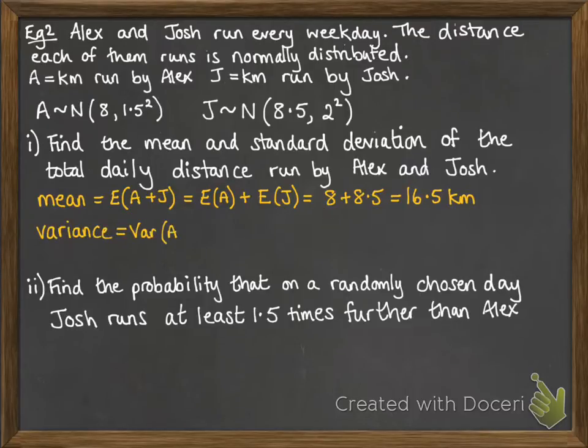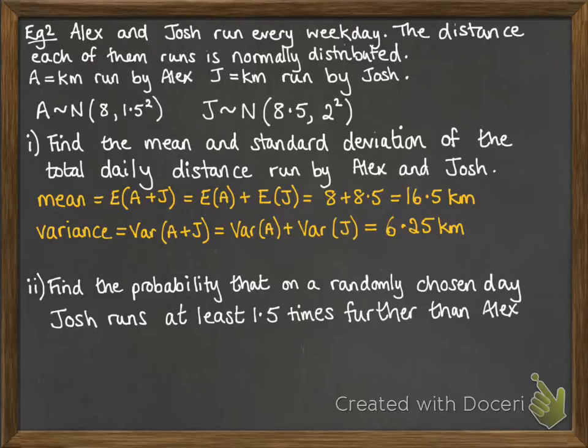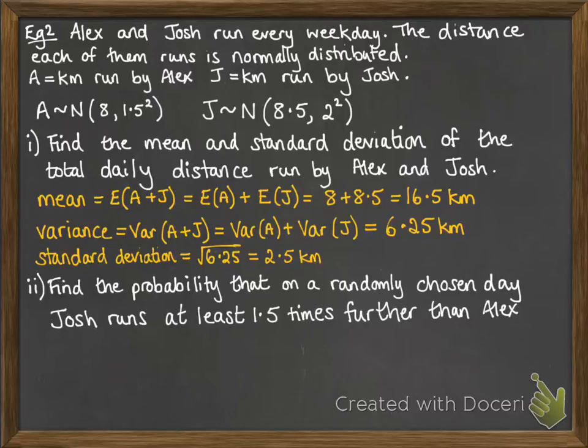The variance is what we want to work with next. We can't go straight to the standard deviation. All of the things that we know about how these work with combining these distributions, all of the rules that we have are about the variance. We have to work with that and then work the standard deviation out from that afterwards. If you try to do it all with standard deviation, you're going to mess up and it's just not going to work properly. The variance of A plus J is the same as doing the variance of A plus the variance of J. So that gives us 6.25 kilometers, but we don't want variance. We want standard deviation. And of course, that is the square root of the variance. So we get the standard deviation is 2.5 kilometers.